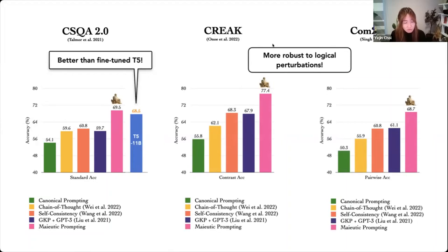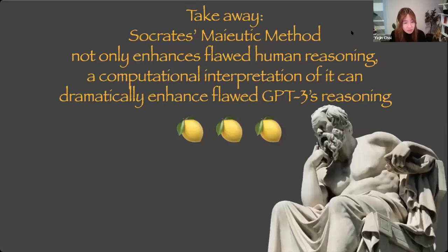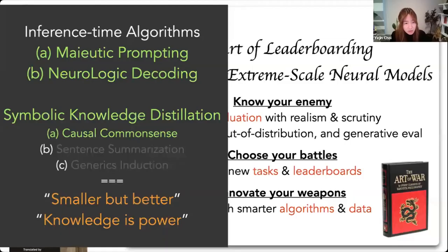And we found that this performance gain is maintained in two other common sense benchmarks. So these are all very recent common sense benchmarks developed by other people. And here we see similar trend. So key takeaway message in this part of the talk is that Socrates' Mayuric method not only enhances flawed human reasoning, the computational interpretation of it can dramatically enhance flawed GPT-3's reasoning as well. And so that's one example of inference time algorithm that we just looked at.